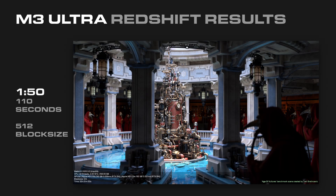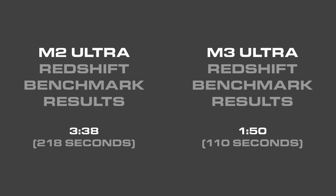In comparison, the M3 Ultra Redshift Benchmark came in at 1 minute and 50 seconds, with the block size set to 512. Over the course of a few hundred or a few thousand frames, the M3 Ultra is a huge gain over the M2 Ultra.